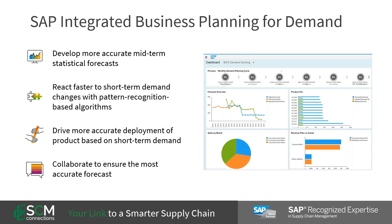We're going to talk a lot more today about the demand planning process and how IBP helps in that regard. The focus here is developing more accurate mid- and short-term statistical modeling, reacting faster to short-term demand changes with pattern recognition, machine learning within demand sensing. You get that long-term statistical modeling, consensus planning coming out of your S&OP process, and then short-term reaction within demand sensing. It also drives more accurate deployment of product — deploying inventory to the right spot at the right time. And IBP enables collaboration, extending your planning process externally through the web interface very easily.